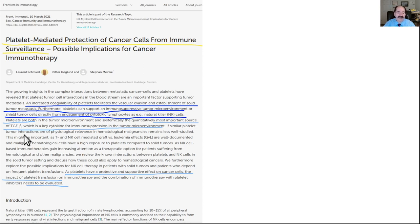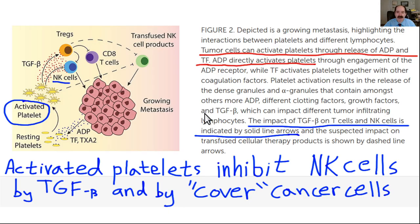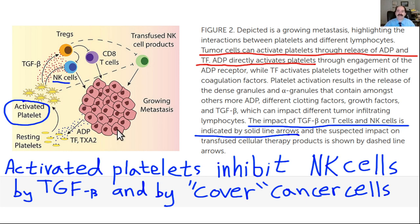Increased TGF-β decreases the immune system's ability to remove cancer cells. Normally, even a one-gram tumor can shed over 3 million cancer cells per day, so a functional immune system is essential. The article illustrates TGF-β's impact on T cells and NK cells — activated platelets block NK cell function. Tumor cells themselves also activate platelets through the release of ADP and tissue factor.